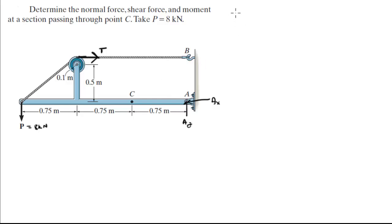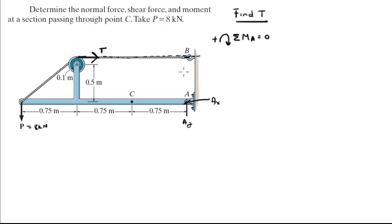The first thing we're going to do is find T. We're going to assume that clockwise is positive for the sum of the moments at A, and all these moments come out to be zero because this is statics. The moment created by T — you calculate the distance between here and A because this is where T points. That distance is given by 0.5 meters plus 0.1 meters, which is the radius of this wheel, so T times 0.6 meters.